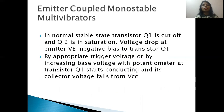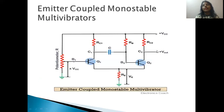Now let's understand the working. In the stable state, we consider that transistor Q1 is in cut-off and transistor Q2 is in saturation. Because Q2 is in saturation, current flows through it and the resistor R_E provides a negative feedback, which keeps Q1 in cut-off. This is a stable state.